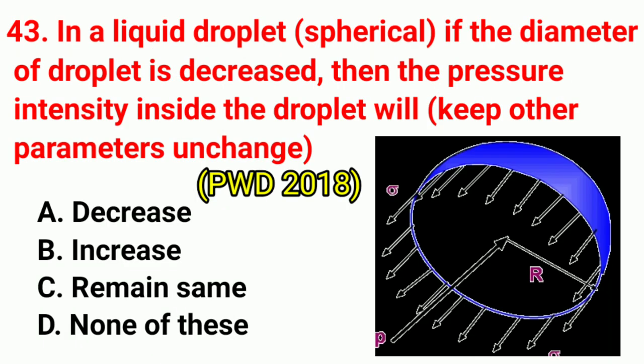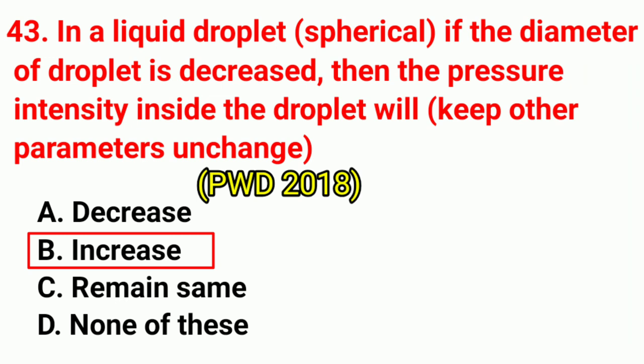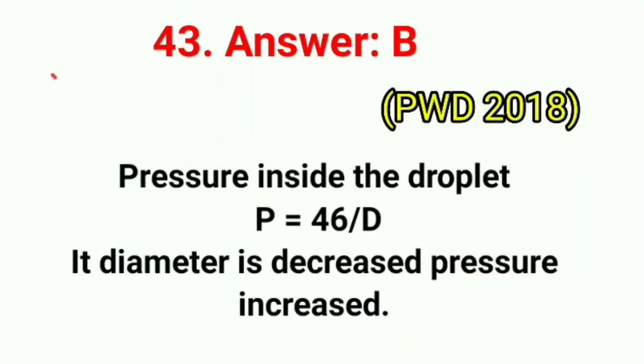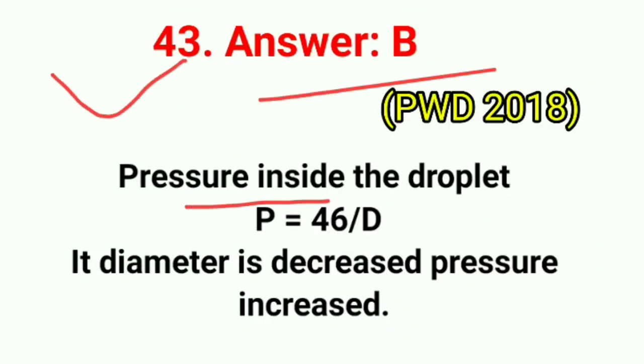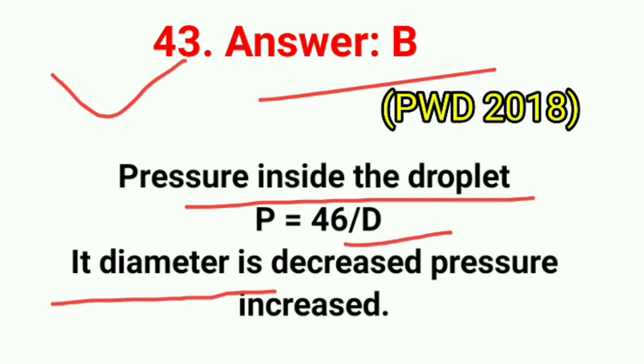Question No. 43. In a liquid droplet (spherical), if the diameter of the droplet is decreased while other parameters remain unchanged, the pressure intensity inside the droplet will? Correct answer is option B: increase. Pressure inside a droplet P = 4σ/D. If diameter is decreased, pressure increases.